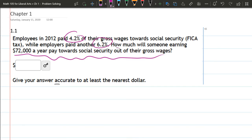So the question is how much will someone earning $72,000 a year pay towards Social Security out of their gross wages? So that's the actual person, not their employer.